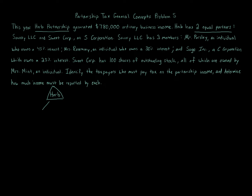LLCs are either taxed as a disregarded entity if they're a single-member LLC, or if they have multiple members, they're taxed like a partnership. Savory LLC has three members, so it can't be a disregarded entity. The other owner of Herb is an S corporation — Sweet Corp. C corporations have a rectangle symbol; S corporations have a hybrid shape, kind of a mix between a rectangle on top and a triangle on the bottom.